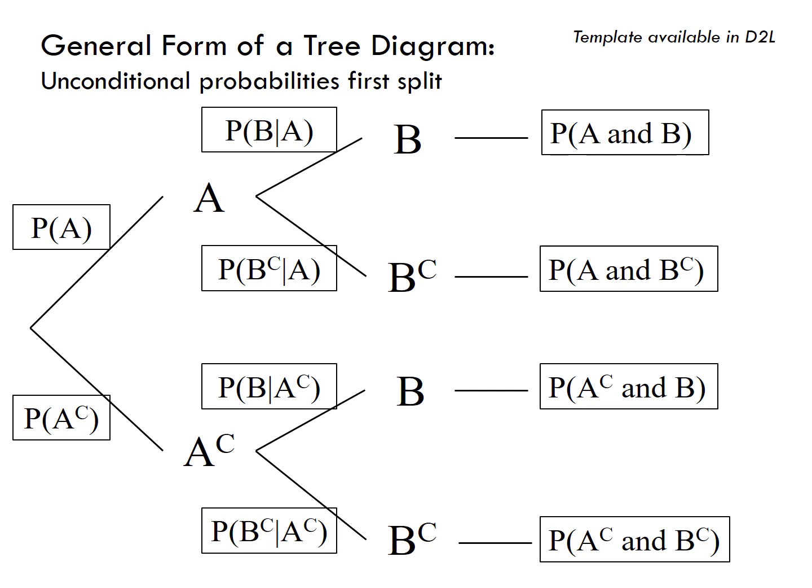The diagram seen here is the general form of a tree diagram. Unlike tables, tree diagrams are written in terms of decimals, so there is no number to start with. The first branch of your tree diagram must be your unconditional probability.